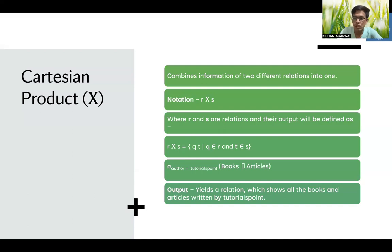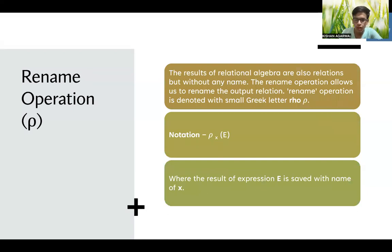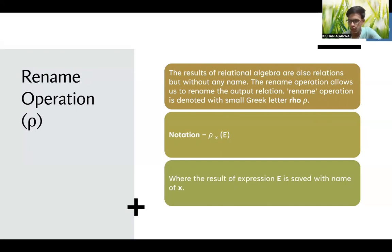So these are the basic operations of relational algebra: selection, projection, union, set difference, intersection, and Cartesian product. Next is the rename operation, denoted by rho (ρ). The results of relational algebra are also relations, but without any name. The rename operation allows us to rename the output relation. The notation is ρ_{new name}(existing relation), where the result of expression e is saved with the name x.